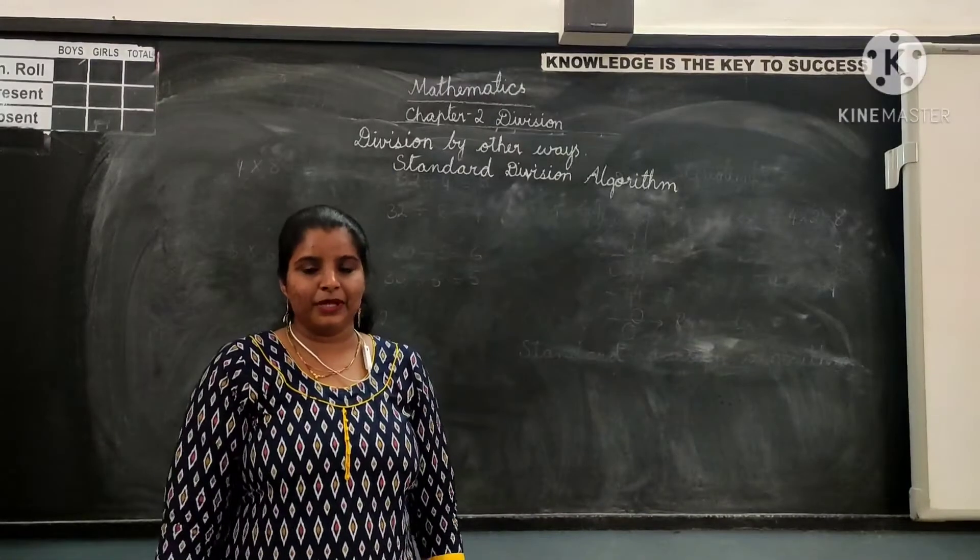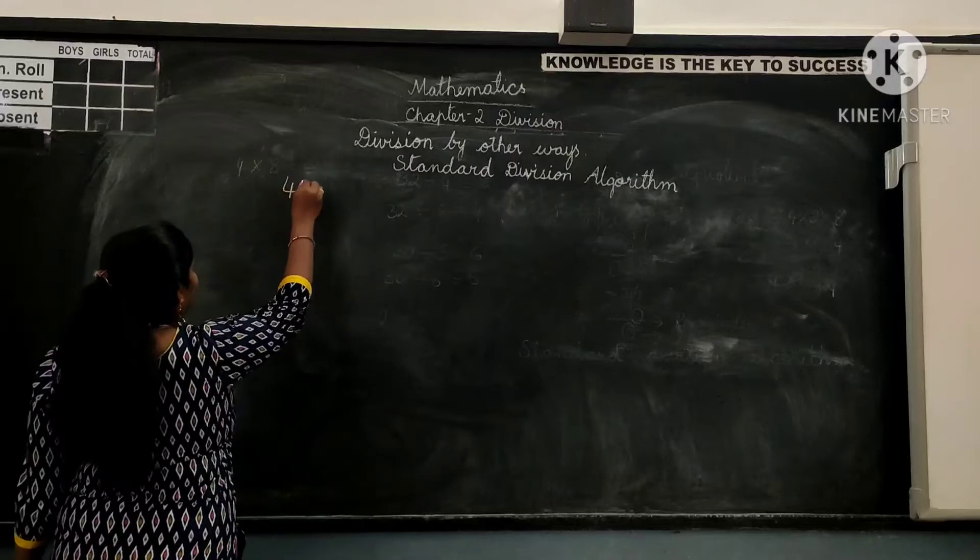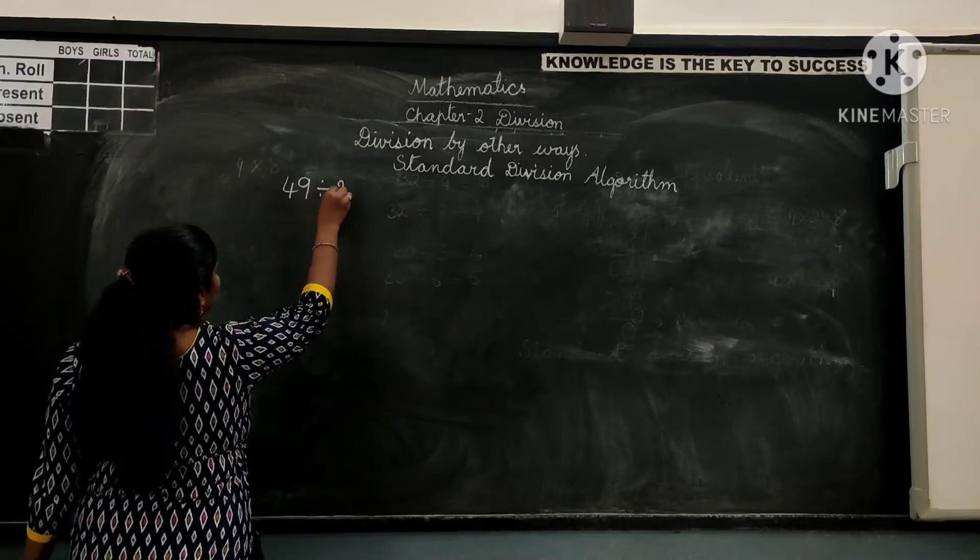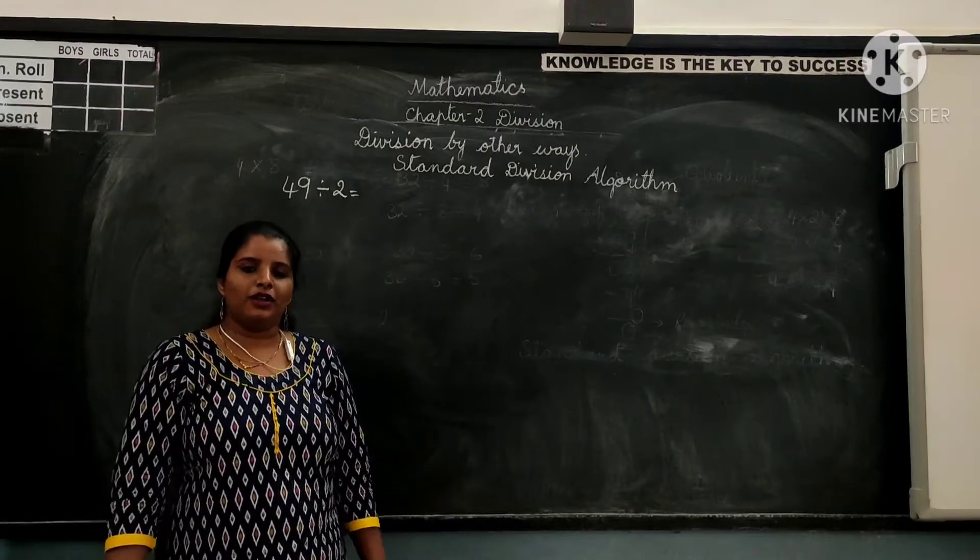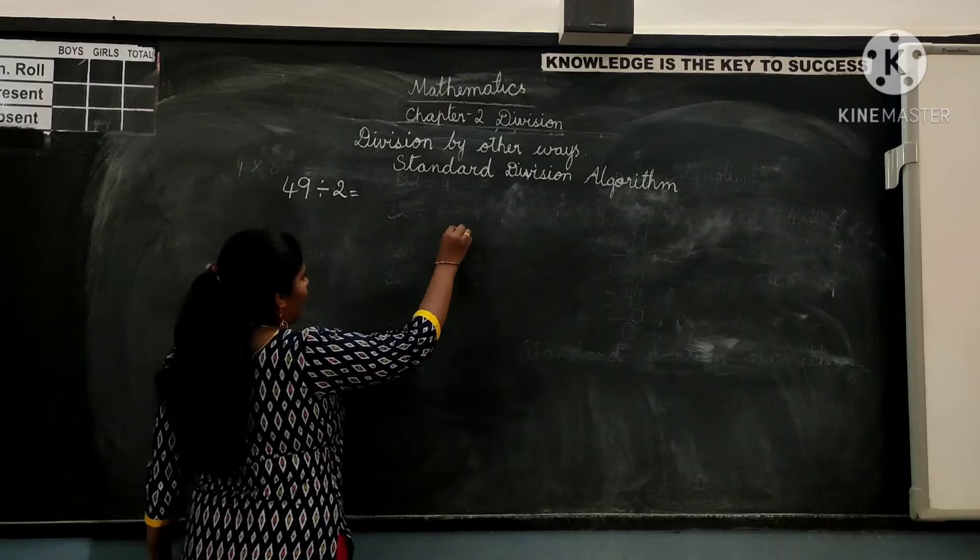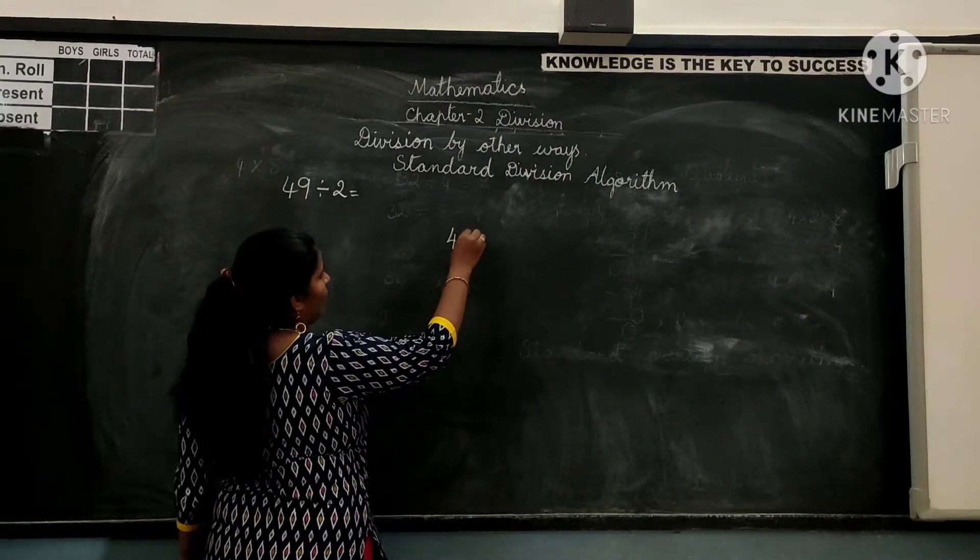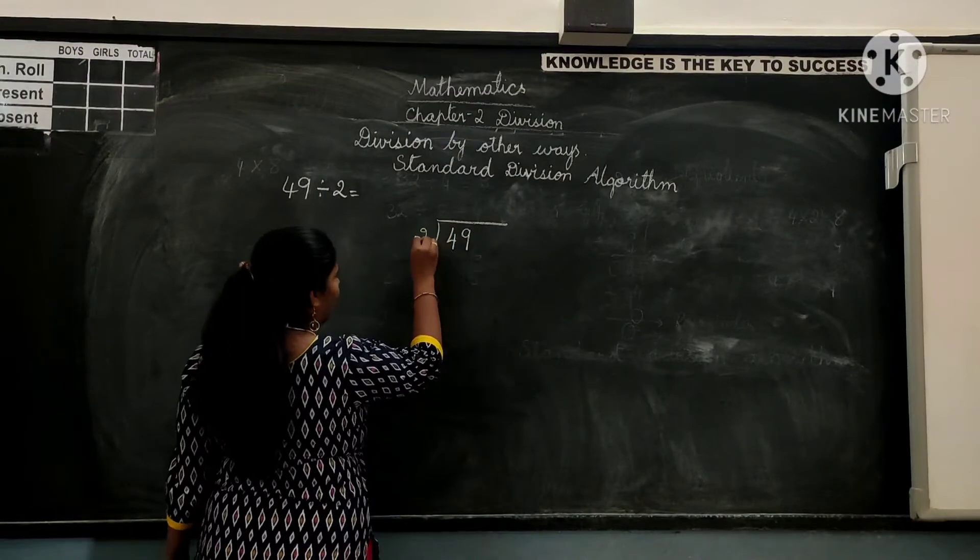So let us see one more example. Divide 49 by 2 using standard division algorithm. Now how to divide 49 by 2? So first divide.